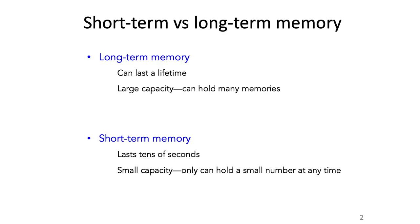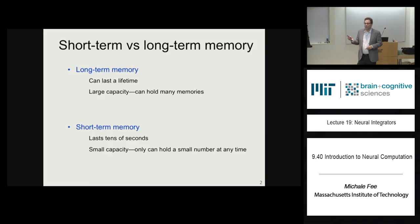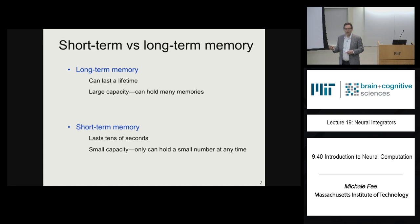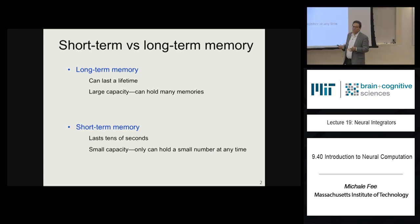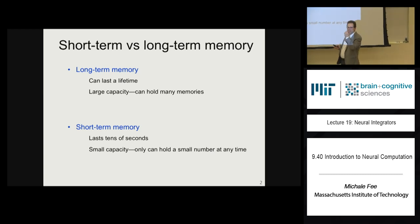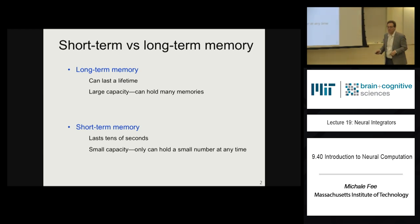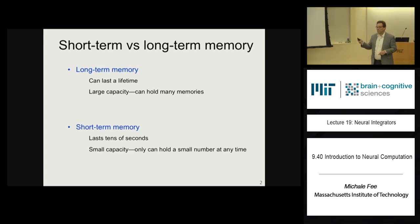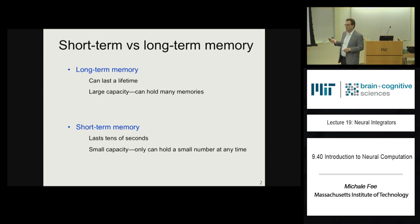Short-term memory has a small capacity — just a few items at a time. The typical number is something like 7; the classic number is 7 plus or minus 2. That's about the length of a phone number that you can remember between the time you look it up and the time you dial it.